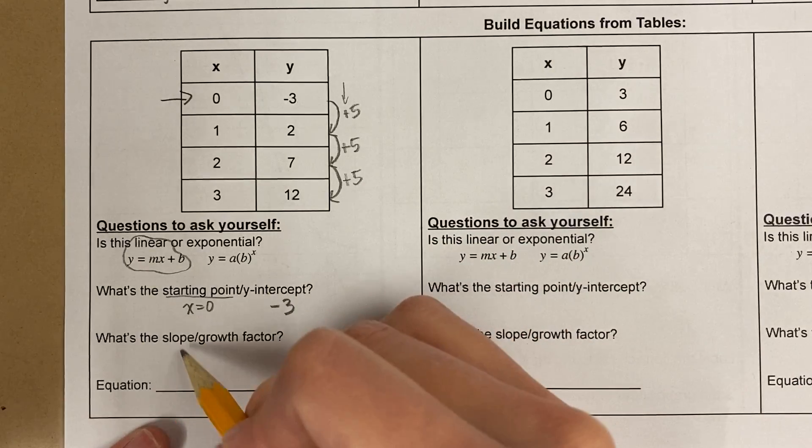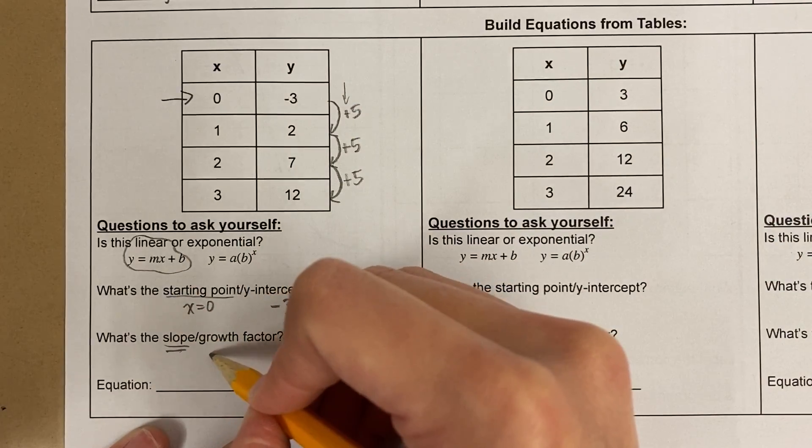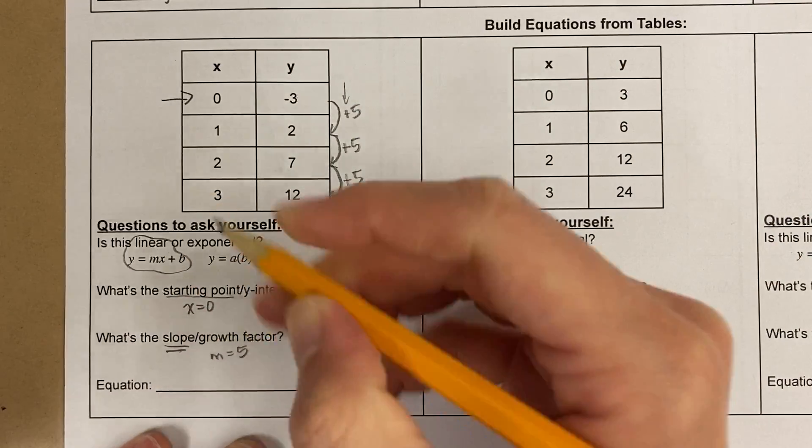And what's the slope? Because with linear we have what's called a slope. So the slope is 5. It's growing by 5.